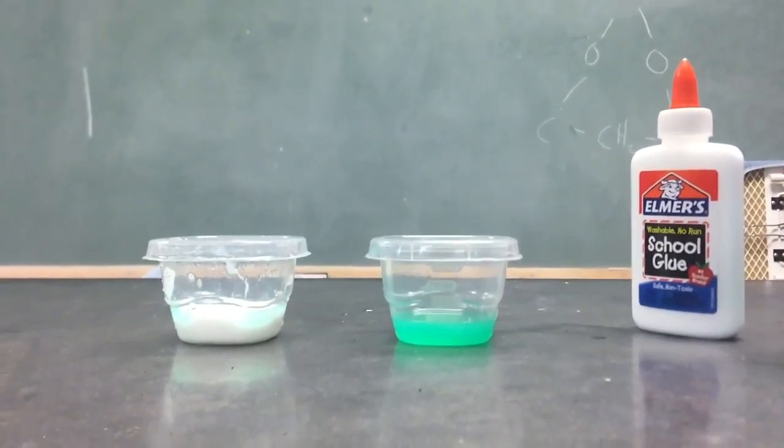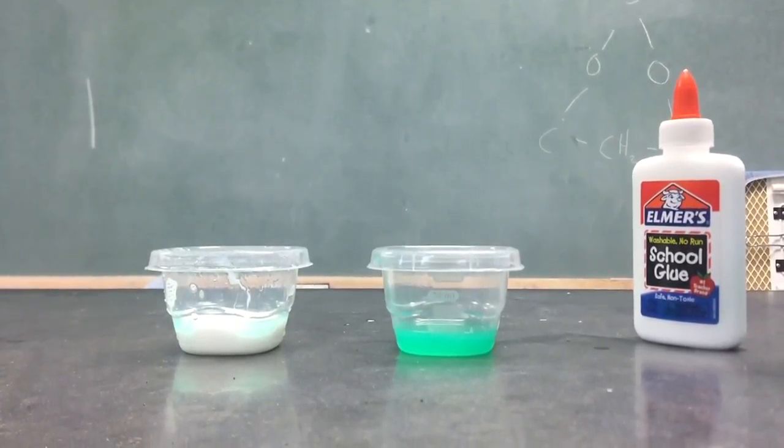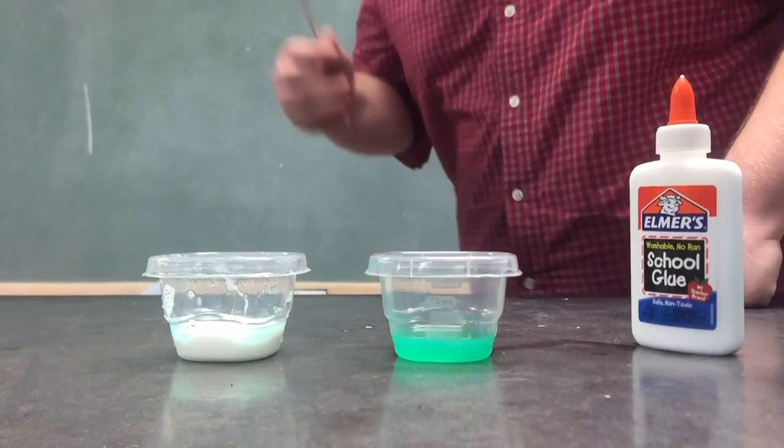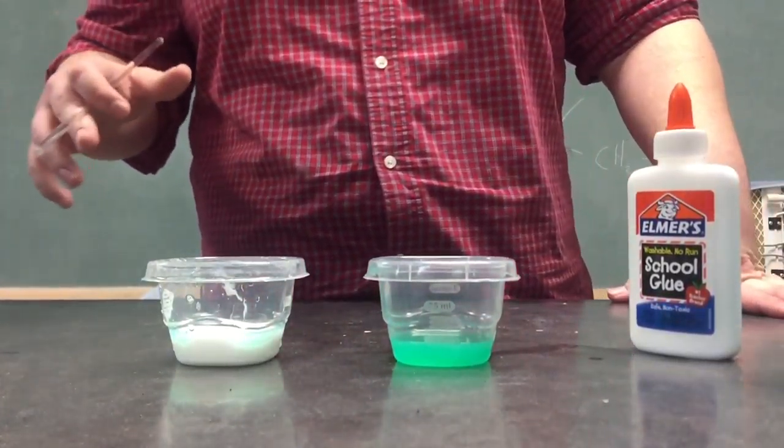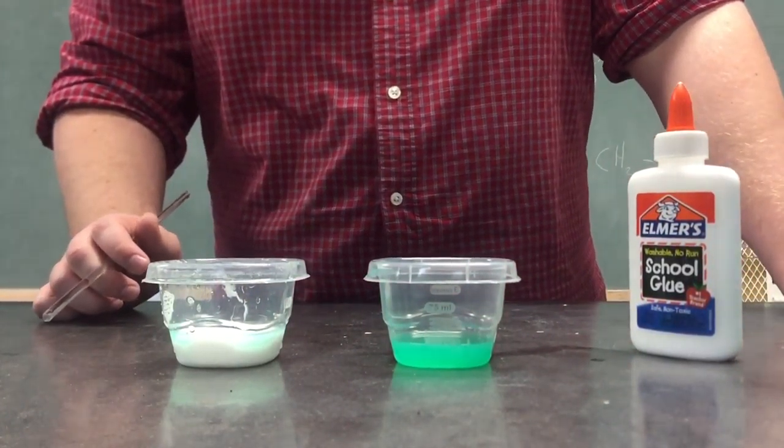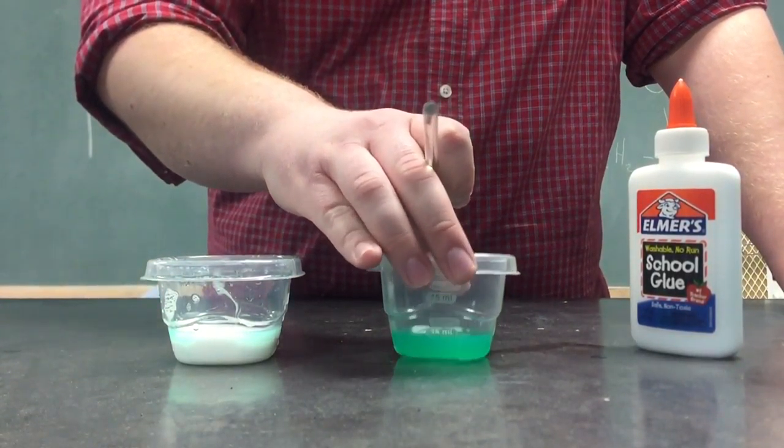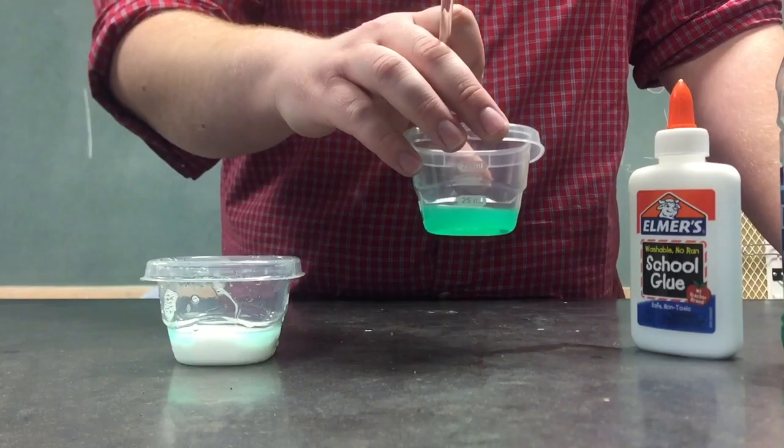In addition to what I was saying, we are now making our polymerization reaction. What we have here is your Elmer's glue, which is going to be our polymer, and we're going to have our Dasani brand detergent, which is going to be our borax.